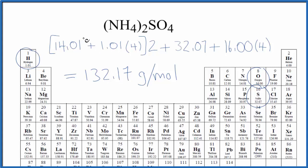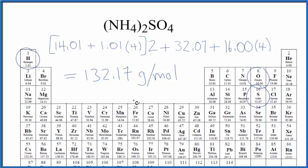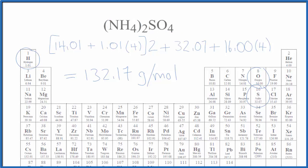Note that my periodic table goes out to one decimal place. If your periodic table goes out more or less, you might get a slightly different answer. This is Dr. B with the molar mass for NH₄₂SO₄, ammonium sulfate. Thanks for watching.